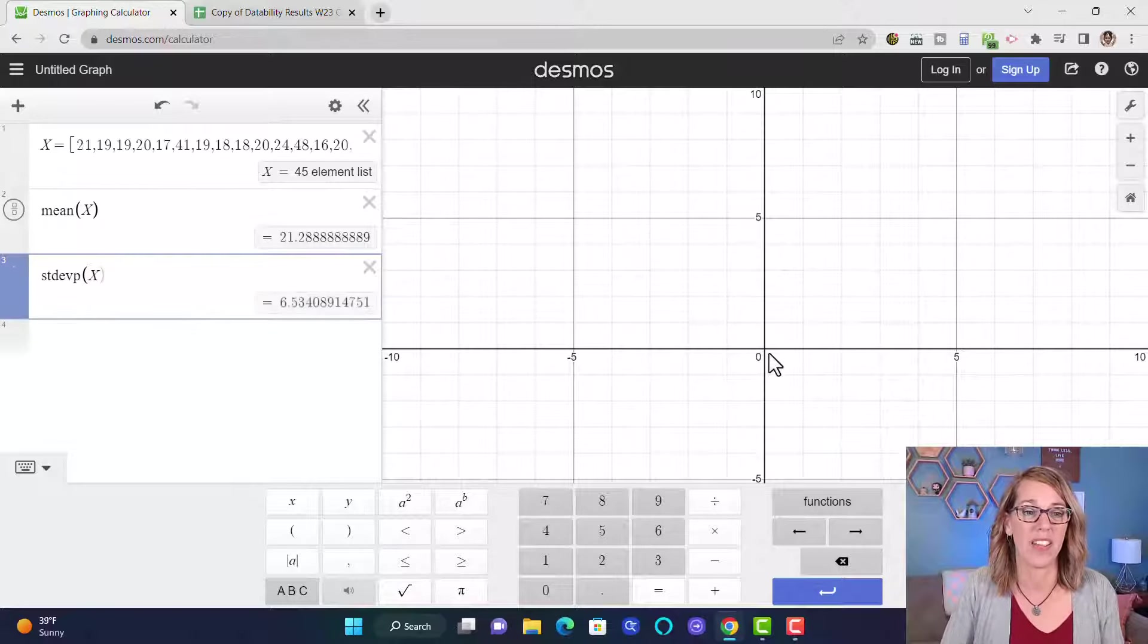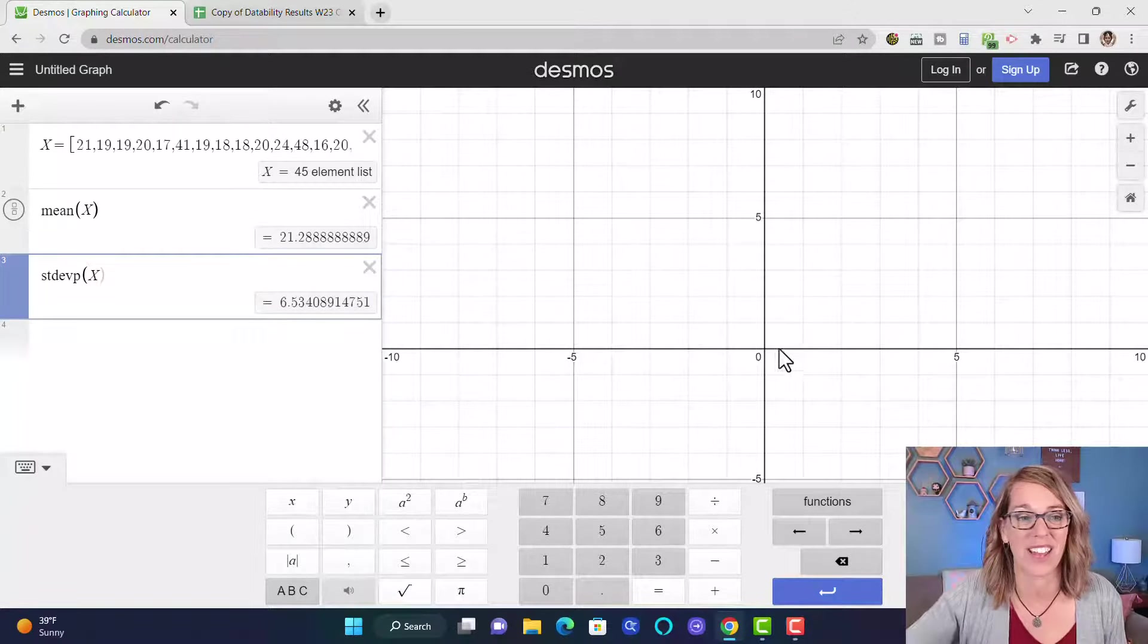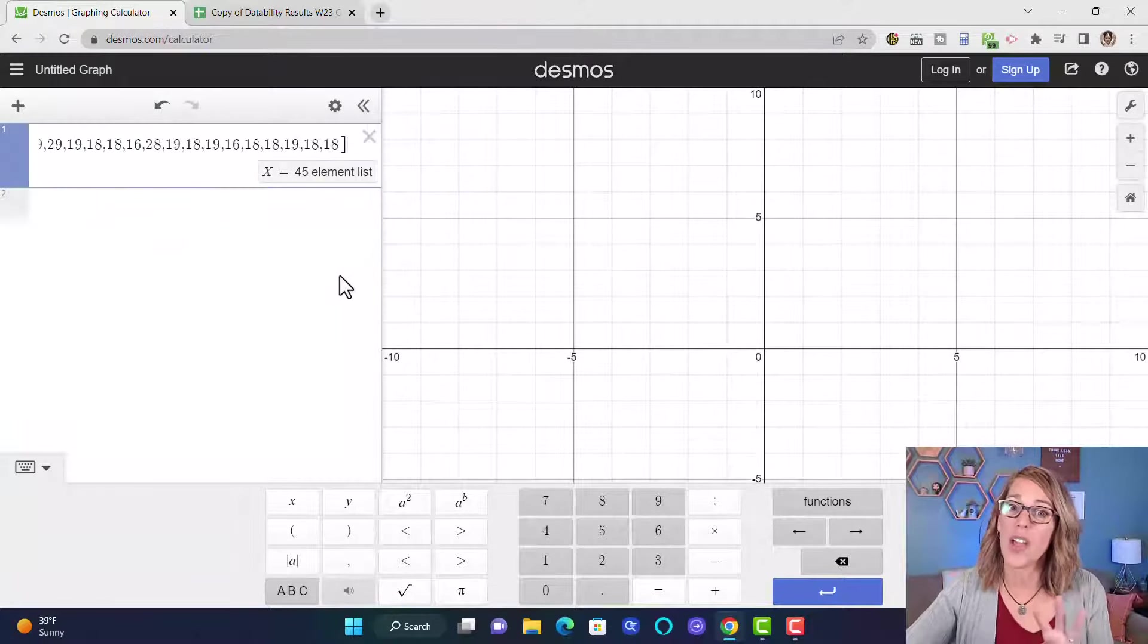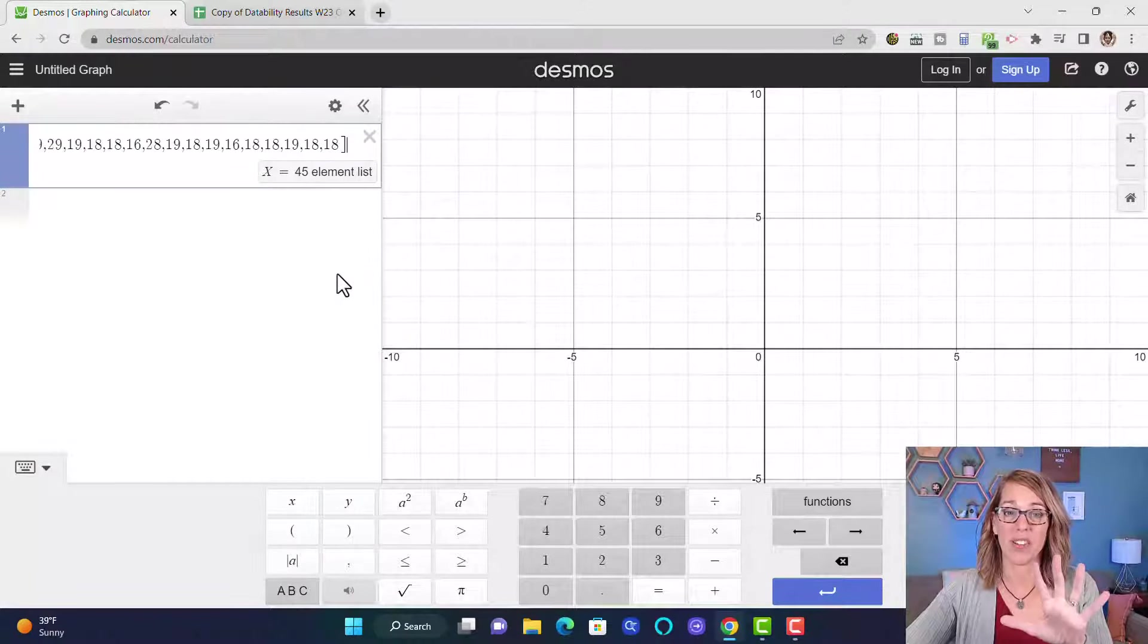This is for the population now, and then type in X and I've got my standard deviation. I'm going to delete a couple of my measures and I want to show you how to grab the five number summary.